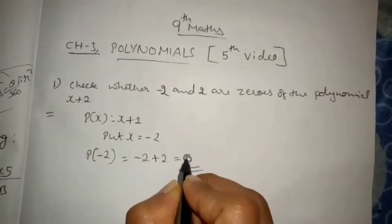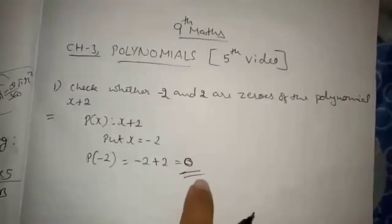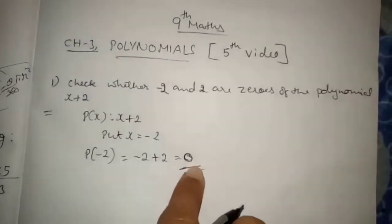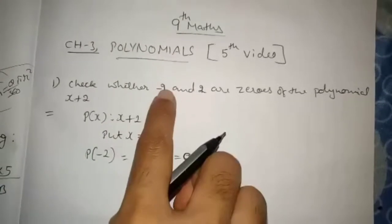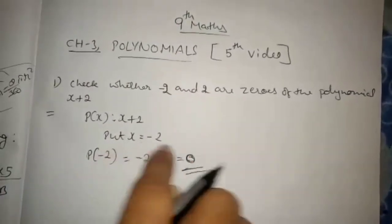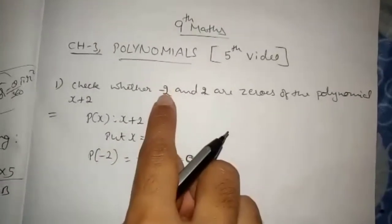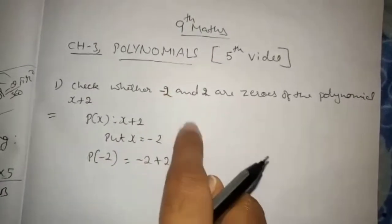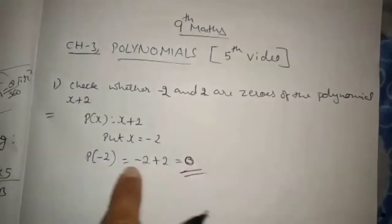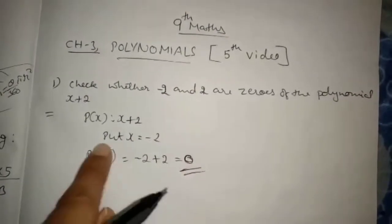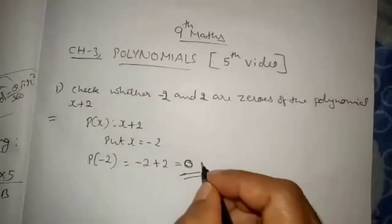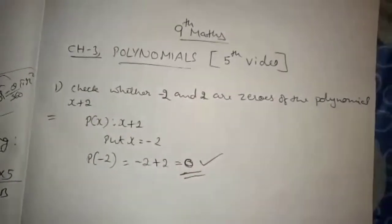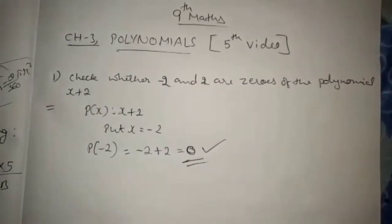If you get the last answer as zero, then we can say that minus 2 is a zero of this polynomial.